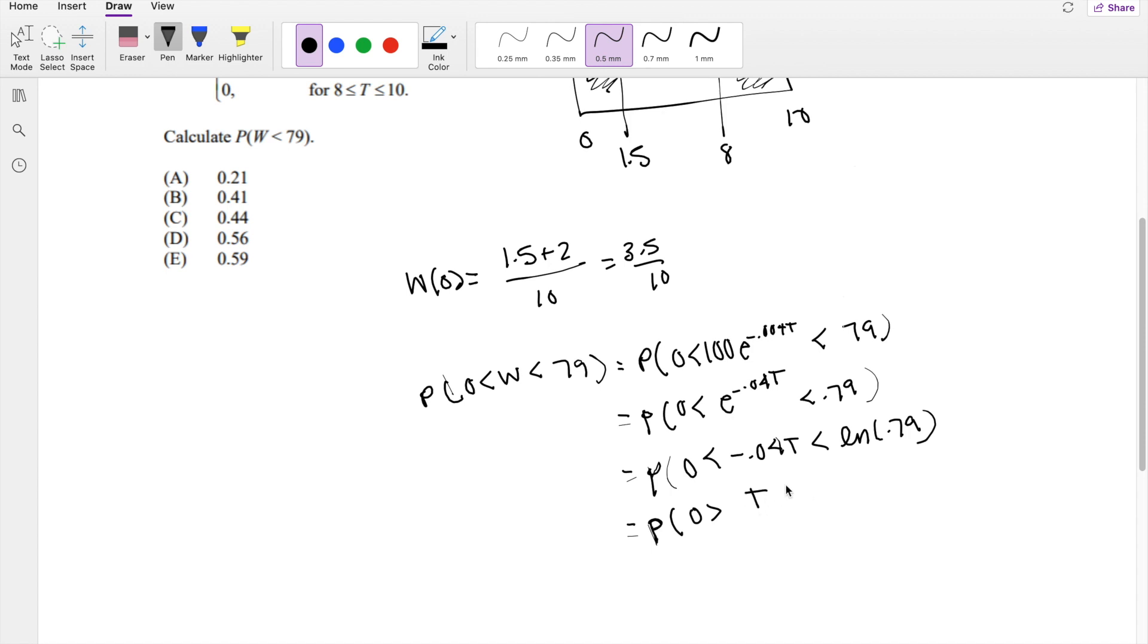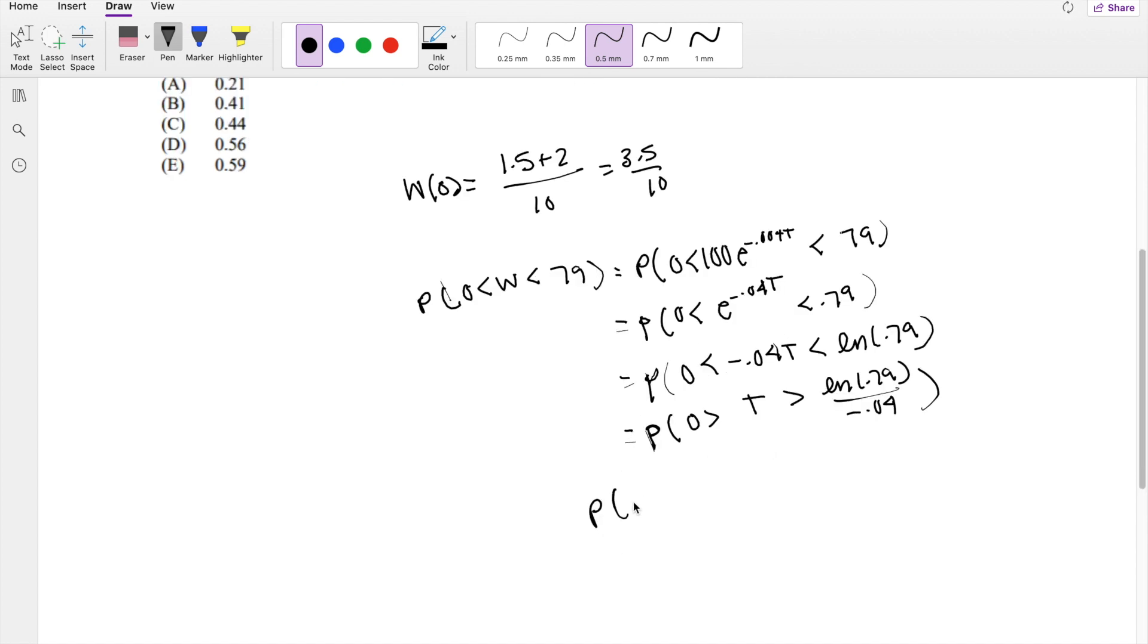T is greater than natural log of 0.79 divided by negative 0.04. So this equals the probability that T is greater than natural log of 0.79 divided by negative 0.04, which equals 5.893.